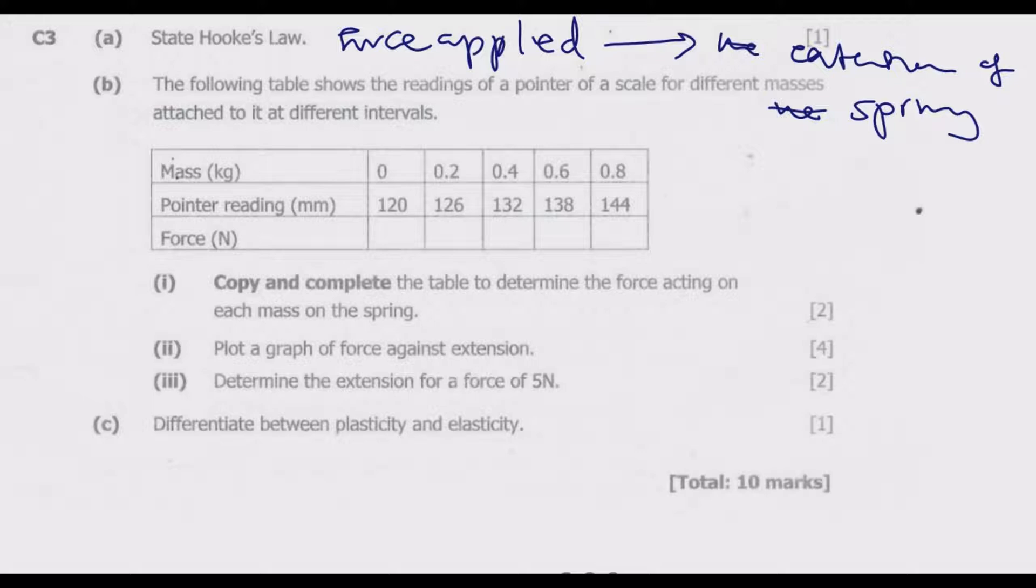We go to question B. The following table shows the readings of a pointer of a scale for different masses attached to it at different intervals. Roman numeral 1: Copy and complete the table to determine the force acting on each mass on the spring. Basically we know that force is a function of mass and gravity or acceleration. We know that gravity is 10 Newton per kg.